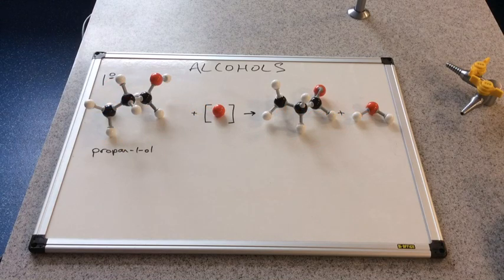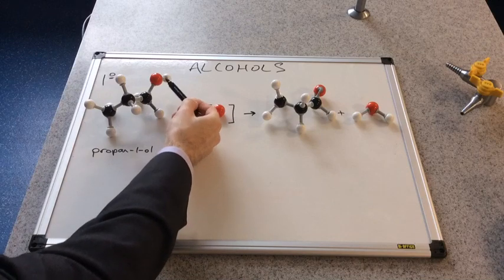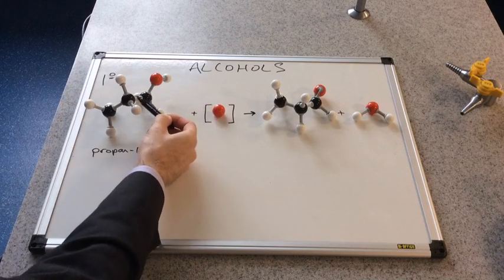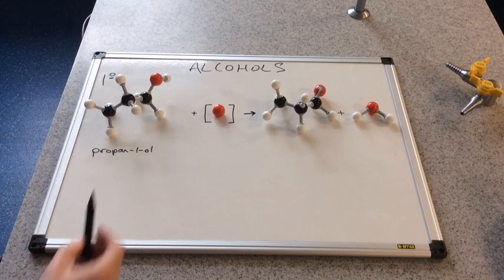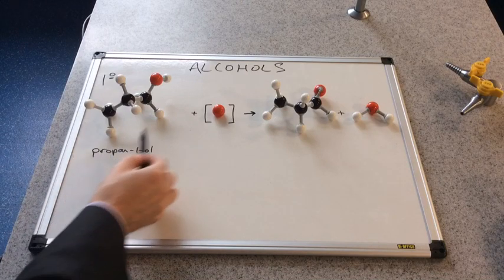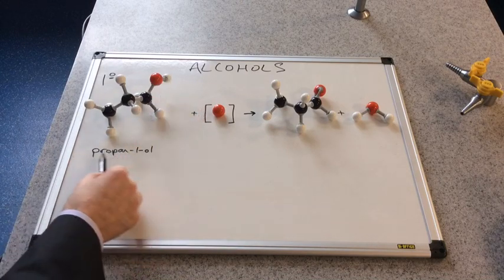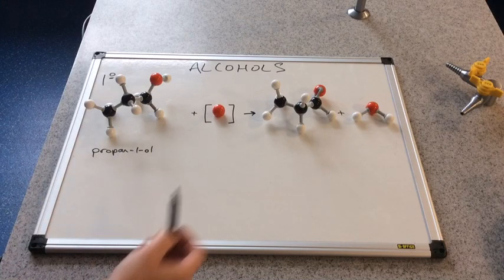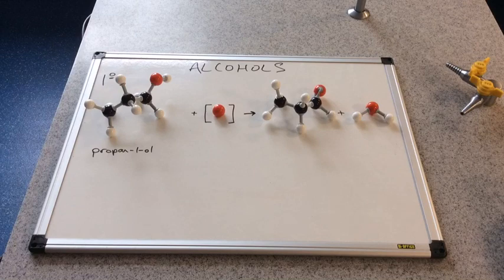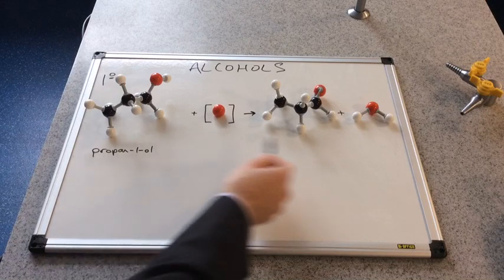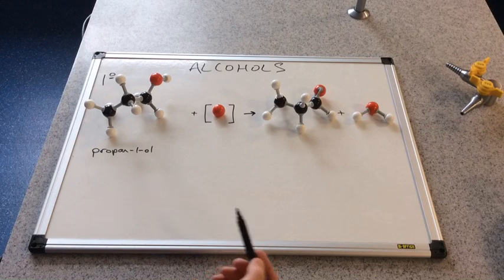We're going to look at primary alcohols first. Remember that's when the hydroxyl carbon is directly bonded to one carbon. Three carbons, OH group on the end, so this is propan-1-ol. Here's our oxidizing agent, the acidified potassium dichromate.